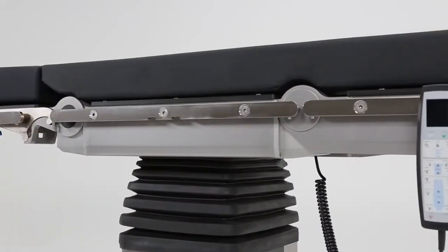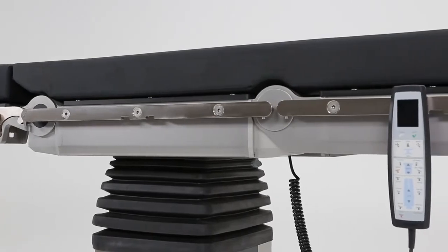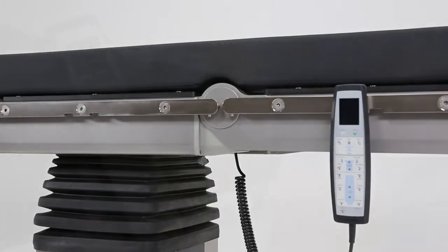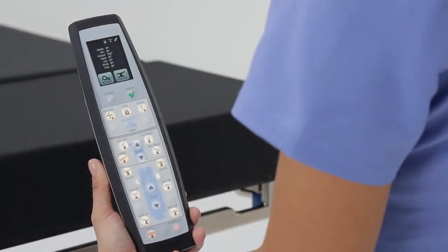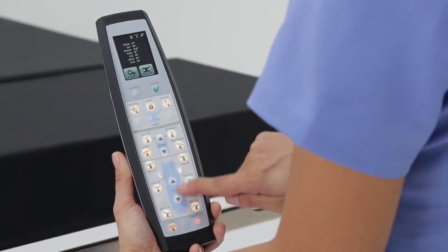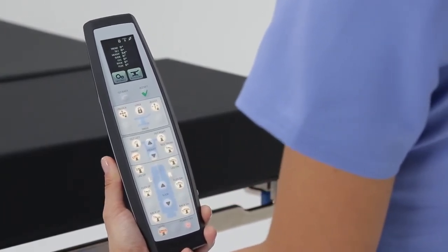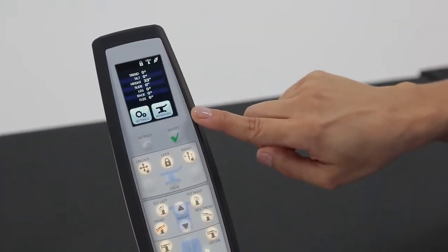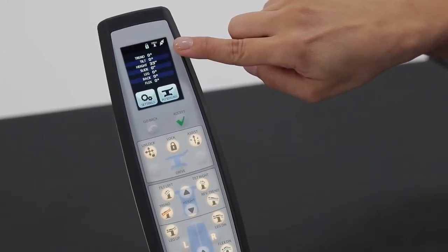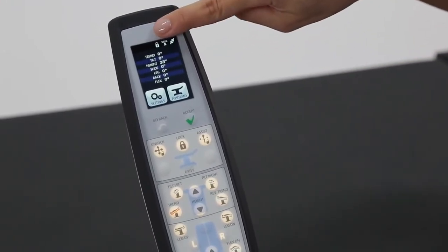The innovation and engineering of the TruSystem 7000 table did not stop at its structure and components. Trumpf took the user interface to a new level with its intuitive and flexible redesign. The layout of the remote control has been designed from the point of view of the anesthesia provider. It is user-friendly and simple to operate with both symbols and words. The LCD touchscreen continuously gives feedback on the current table state, including table height and degrees of articulation.